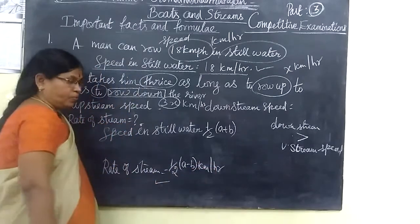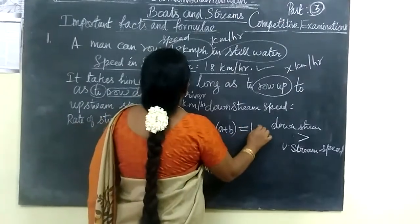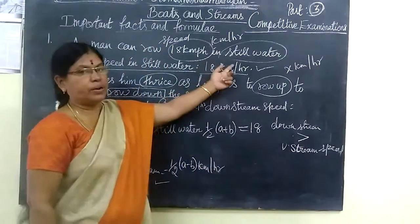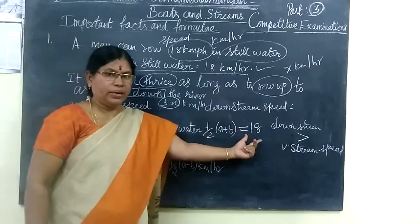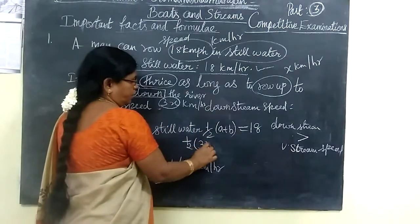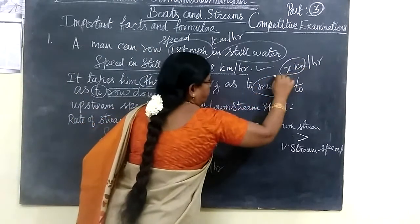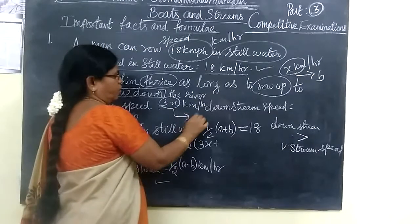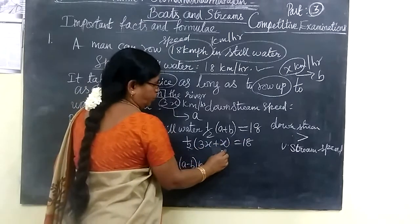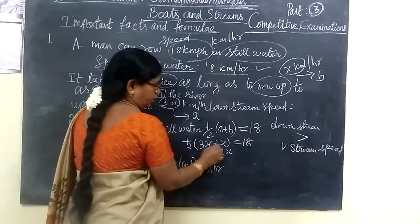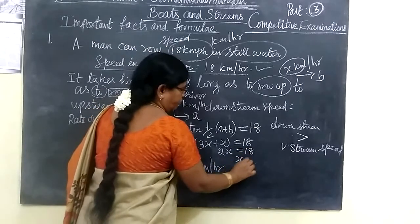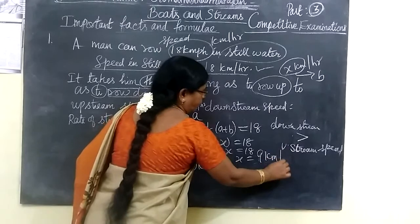This is given as 18 km per hour. So, 18 = half of (3X + X). That gives us 4X by 2, which means 2X. So, 2X equals 18, therefore X equals 9 km per hour.